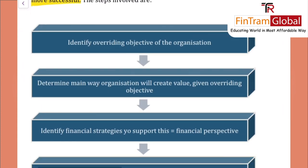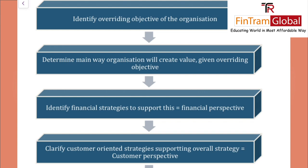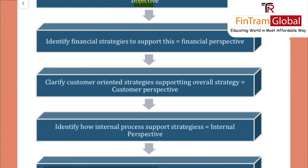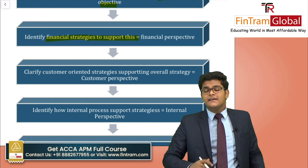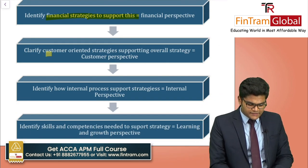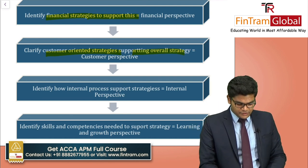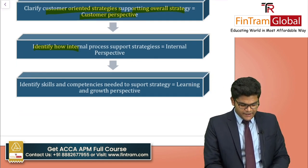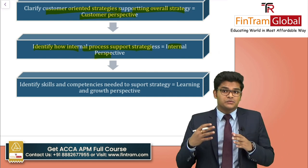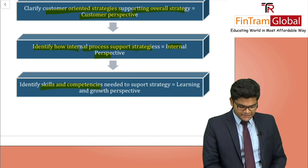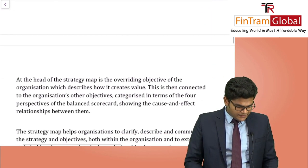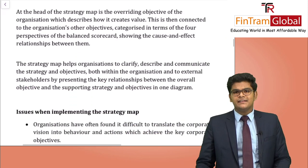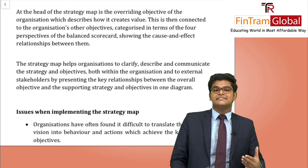Looking at the formal figure, the step-by-step approach is: first, identify the overriding objective of the organisation and determine how it will create value. Then identify the financial strategies to support this. After that, clarify the customer-oriented strategies. Then identify internal process support strategies. And finally, identify the skills and competencies needed to support strategy in the learning and growth perspective.